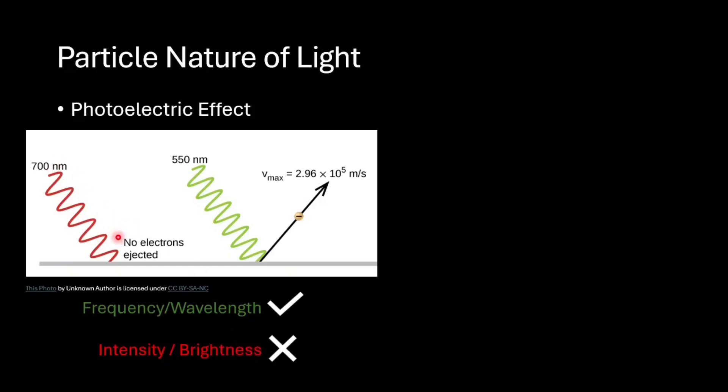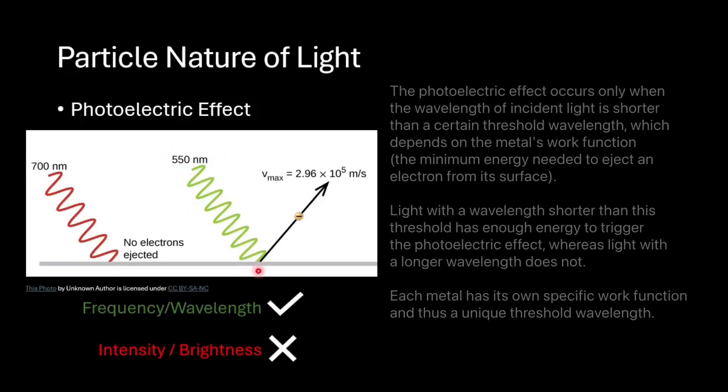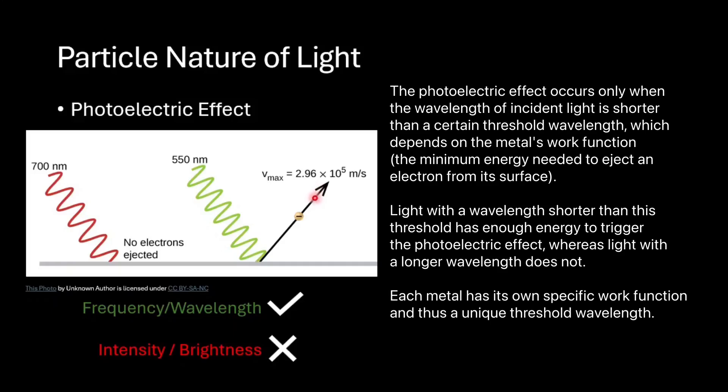If light were just a wave, even long wavelength light should eventually give electrons enough energy to escape. But experiments showed that only light with a short enough wavelength can release electrons instantly and longer wavelengths are unable to eject electrons at all.